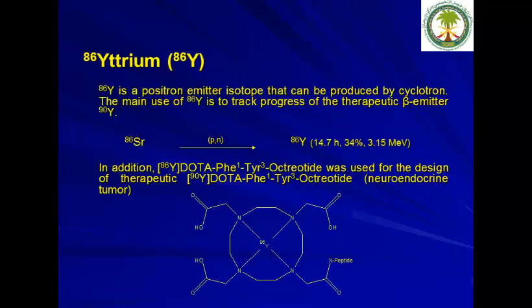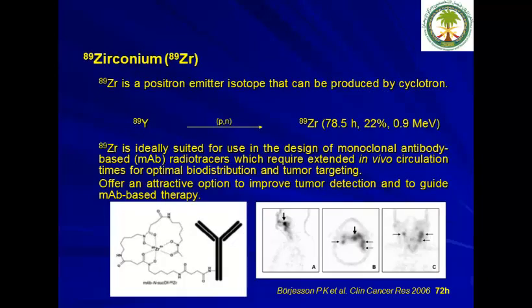Yttrium-86 is another PET radionuclide used to resemble yttrium-90 for treatment of neuroendocrine tumors. Zirconium-89 is also of growing interest — it is produced at our facility for research purposes and is used with antibody radiolabelling, because monoclonal antibodies have very slow clearance in the body and require a long-lived radionuclide.